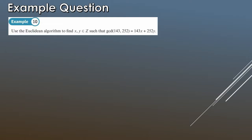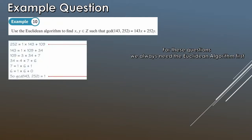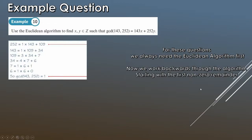The first thing to do for any of these questions is always work out the Euclidean algorithm first. This has been done for us — it's just following the Euclidean algorithm pattern, and we obtain that the GCD is equal to 1, so these two numbers are co-prime. What we're saying is that 143x plus 252y is equal to 1, so we've got to find the integer coefficients for x and y. We're going to work backwards through the Euclidean algorithm, starting with the first non-zero remainder.